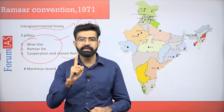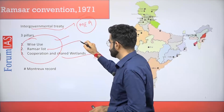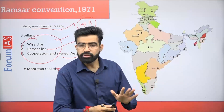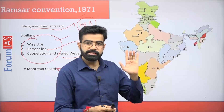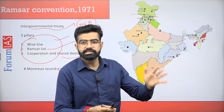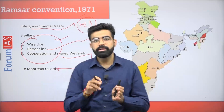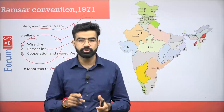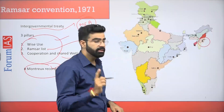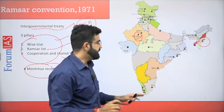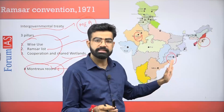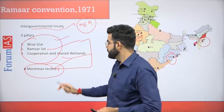दूसरा pillar है Ramsar List — इसमें जो भी country join करती है वो at least एक wetland submit करेगी। उस wetland को list में recognize किया जाएगा, लेकिन वो legally उस country का ही रहेगा। तीसरा pillar है cooperation — जैसे India और Bangladesh के बीच में कोई particular wetland हो, तो दोनों मिलकर उसे conserve करेंगे। Ramsar List में Montreux Record भी होता है — ऐसे wetlands जिनमें anthropological reasons या pollution के कारण ecological changes आ चुके हैं या आने की आशंका है। India के दो wetlands Montreux Record में हैं: Loktak Lake (Manipur) और Keoladeo Ghana (Rajasthan)। Chilika Lake भी थी लेकिन best conservation practices के चलते 2002 में उससे निकल चुकी है।